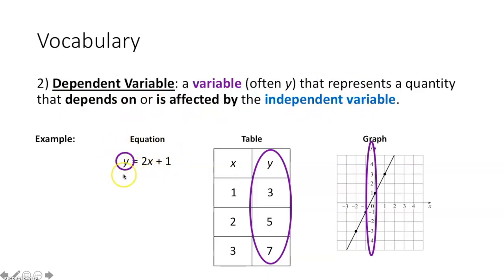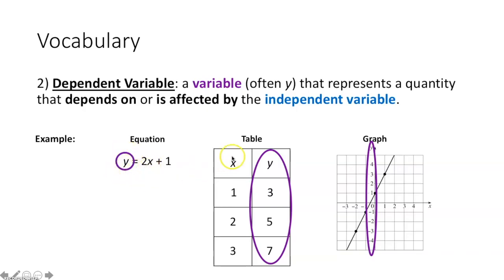We have our equation solved for y, and we plug in something for our independent variable x. Then we simplify the expression and get what y equals. Y depends on whatever we plug in for x, so y is called the dependent variable. In a table, it's usually the right column, and on a graph, the y-axis is usually going to be your dependent variable.